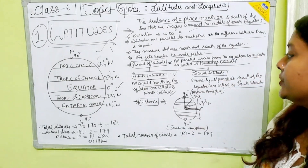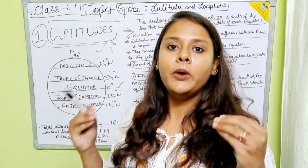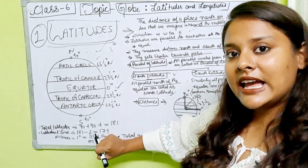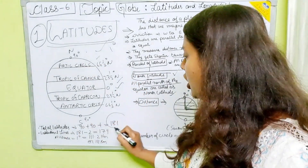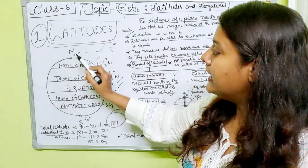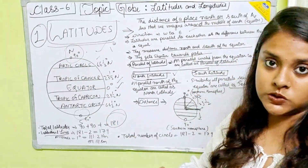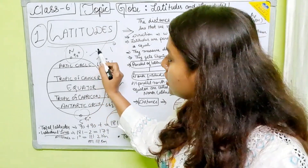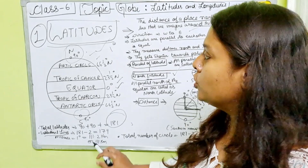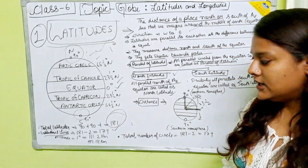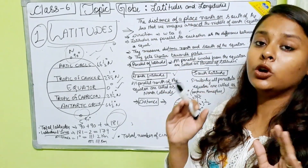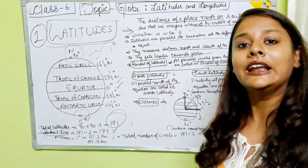When we talk about how many latitudes are there: above the equator in the Northern Hemisphere 90 latitudes are present and below 90. So 90 plus 90 is 180, and 1 is for the equator. So 181 total latitudes are there. When we talk about latitudinal lines, the northern pole and the southern pole are points, not lines. So the total number of latitudinal lines becomes 181 minus 2, which is 179.